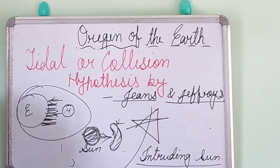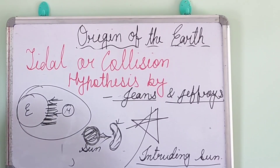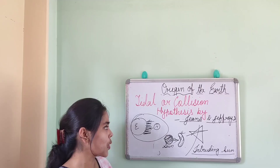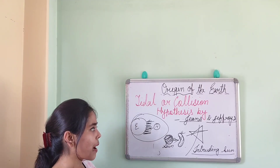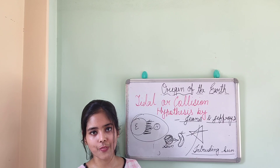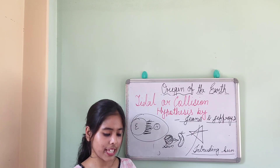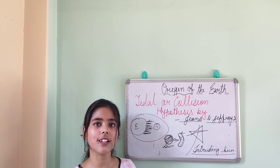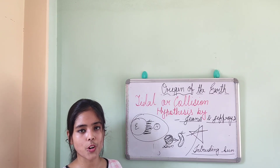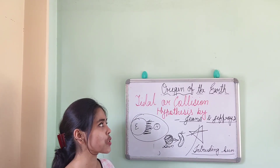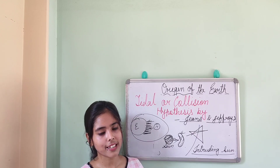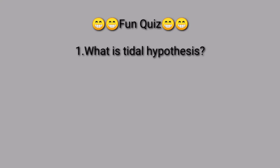So that is all about the Tidal or Collision Hypothesis by Jeans and Jeffreys. In the next class we are going to discuss the most important theory regarding the origin of the earth — the Big Bang Theory. Till then, thank you.